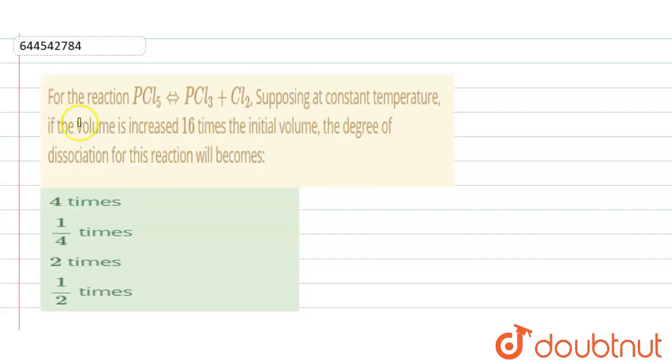Hello everyone. For the question, for the reaction PCl5 you get PCl3 and Cl2, supposing at constant temperature, and if the volume is increased 16 times the initial volume, the degree of dissociation for this reaction will become how much? That we have to calculate. Four options are given. Let us choose the correct option.